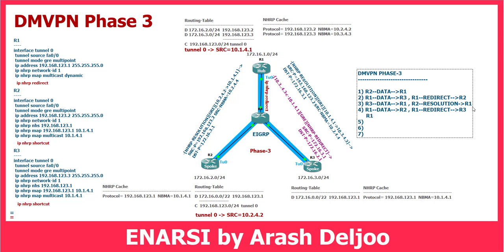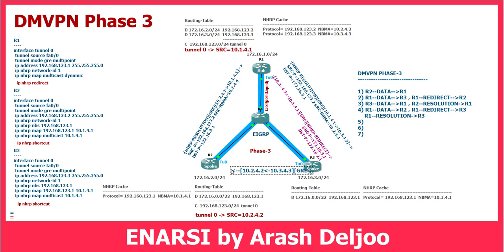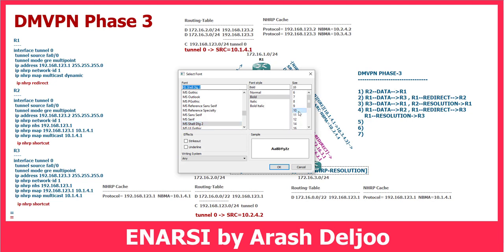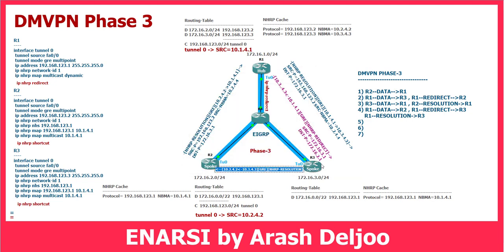In Step 4, we have three functions: first, R1 should forward the data to R2 — you have seen that. Then R1 should send a redirect to Router 3. After that, R1 is forwarding the resolution request to Router 3. This resolution is now received by Router 3. In the next step, Router 3 should answer the resolution request back to Router 2. Look here — we have one resolution reply where the source is Router 3, destination is Router 2 (10.2.4.2), source is 10.3.4.3, then GRE, then NHRP resolution, and here we have the NBMA address of Router 3.